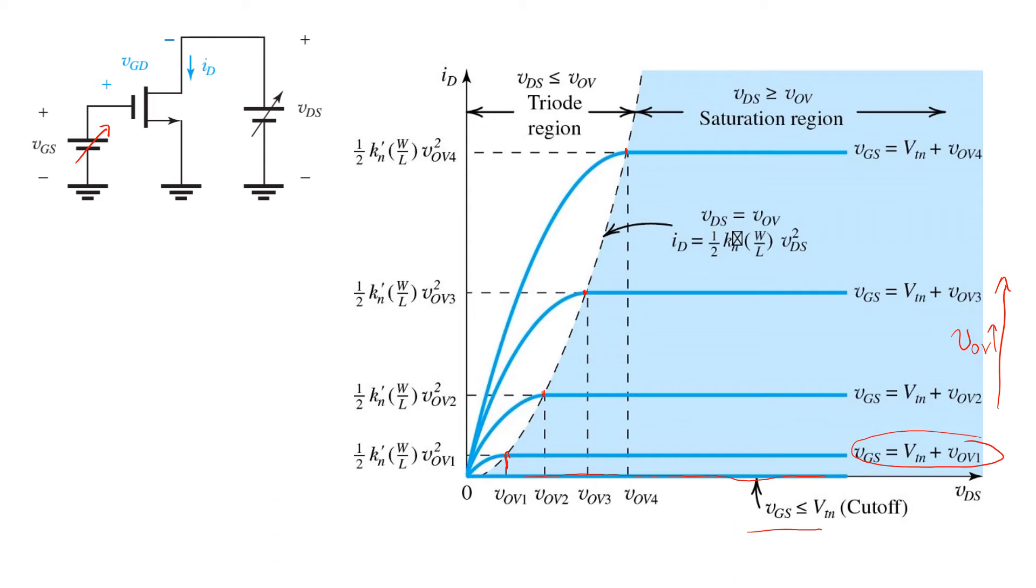So the transition point has a current given by the current in saturation, the square law expression: one-half KN prime, W over L, VOV squared. So that means that the transition point is a quadratic function of VDS, since at the transition point, VOV equals VDS. So you have this quadratic shaped region curve to the left of which we're in triode, and to the right of which we're in saturation.